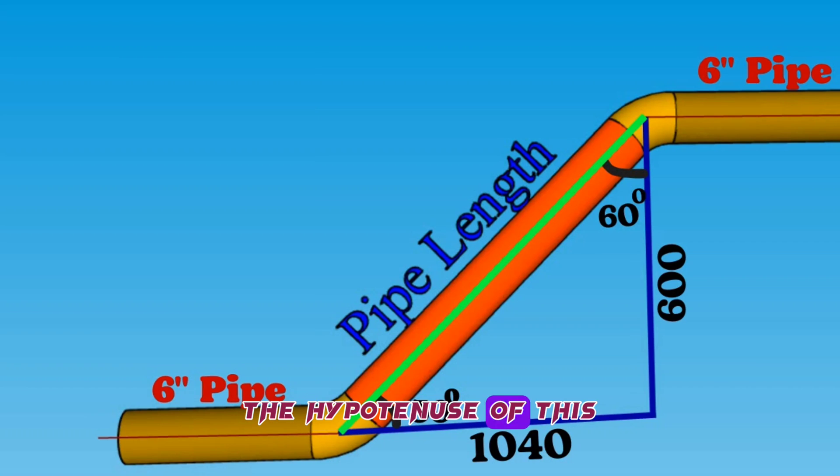The hypotenuse of this right-angle triangle is the distance between the elbows in the pipeline. Let's mark the hypotenuse of this right-angle triangle with H.